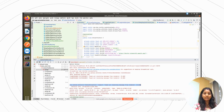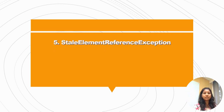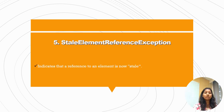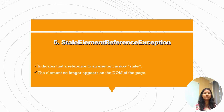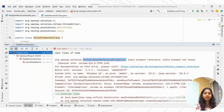The last one is StaleElementReferenceException, which is a very important interview question especially if you have around 3 to 5 or more years of experience. This exception indicates that a reference to an element is stale and the element no longer appears in the DOM of the page. This can happen when you refresh your page or perform some actions and then try to access that element again. It looks like 'StaleElementReferenceException: stale element not found.'